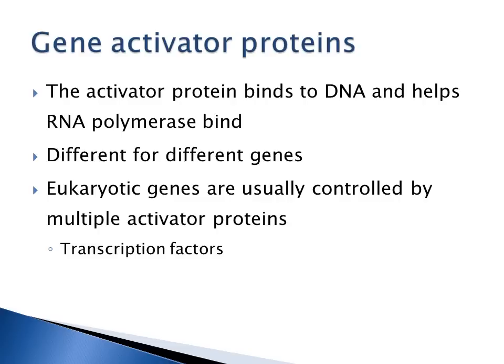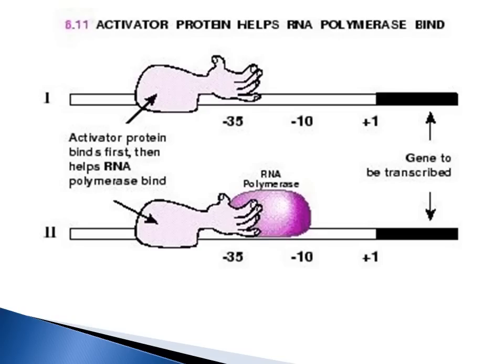Accessory proteins are gene activator proteins — proteins that bind to DNA and help RNA polymerase come in and bind so that you can get transcription. These activator proteins are different for different genes. In eukaryotic cells, because eukaryotes are more complex, they have multiple activator proteins called transcription factors. Think of your activator as a helping hand that comes in, binds, grabs RNA polymerase, brings it down onto the consensus sequence, and signals that this gene needs to be transcribed.